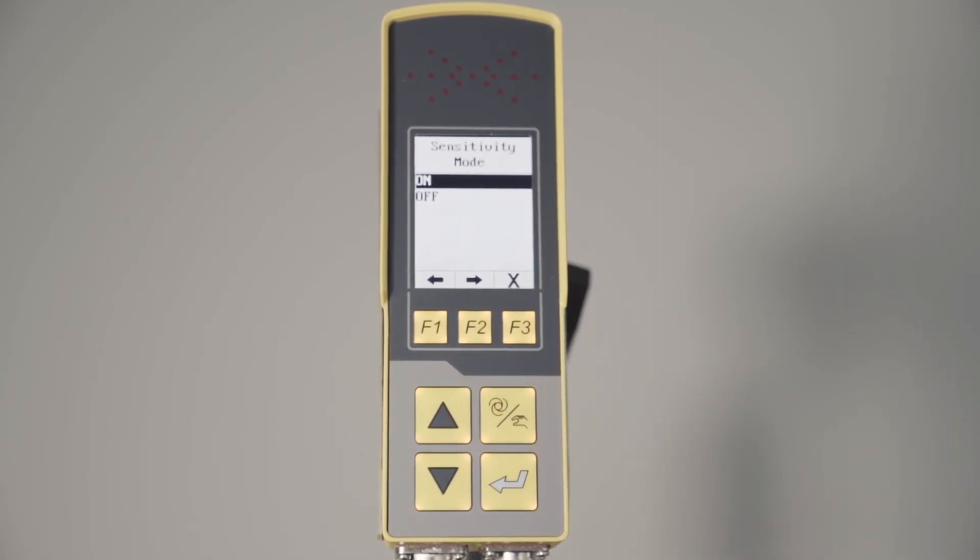Sensitivity mode is on. If you turn that off, dead band and proportional band will show up in the main menu of the operator's menu, in the F3 menu.